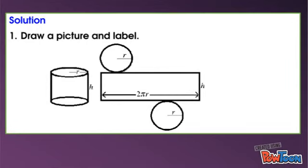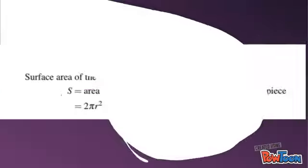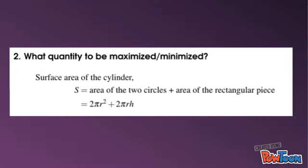The drawing of a closed cylindrical metal kin and the surface area of the metal kin are shown. The surface area of the metal kin consists of two circles and one rectangular shape. The objective of this problem is to minimize the surface area. S is equal to 2πr² + 2πrh.